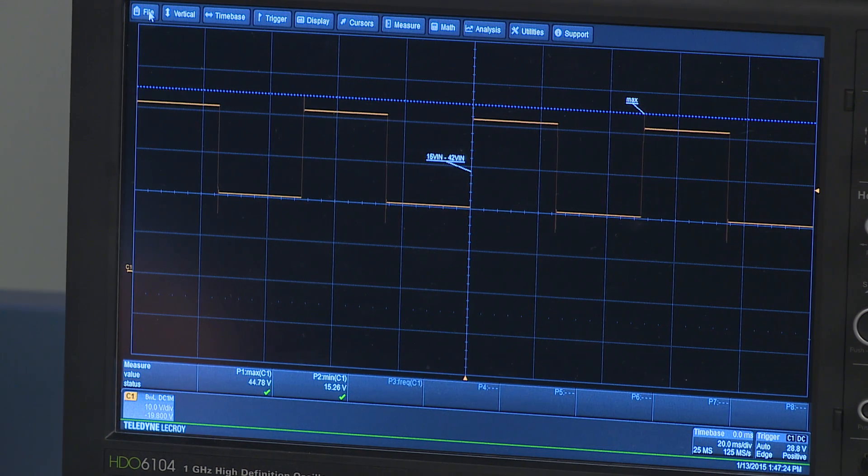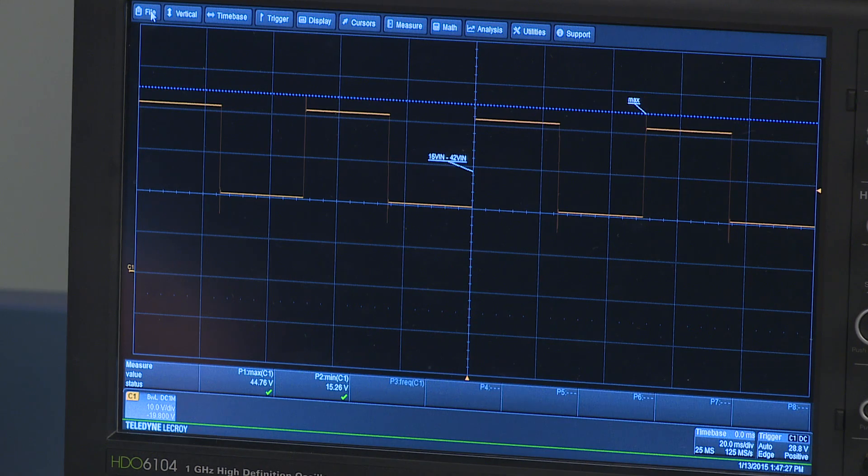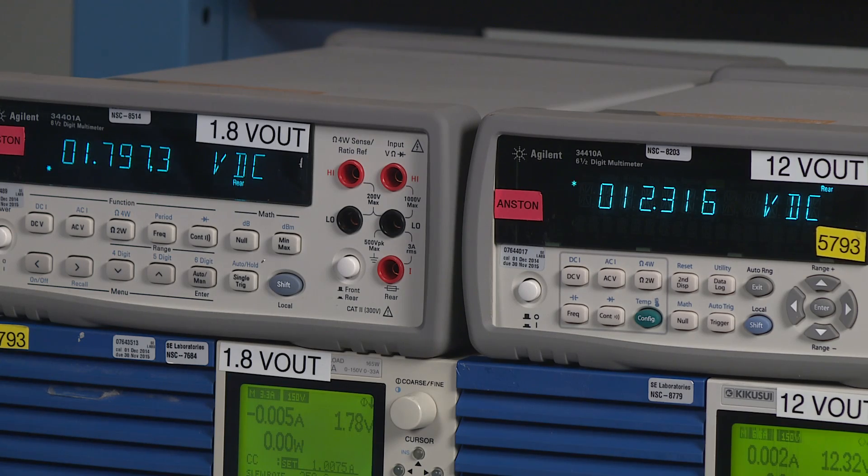As you can see on our scope, you have the line transient fed to the board. Also, you can see that the board is now regulating.